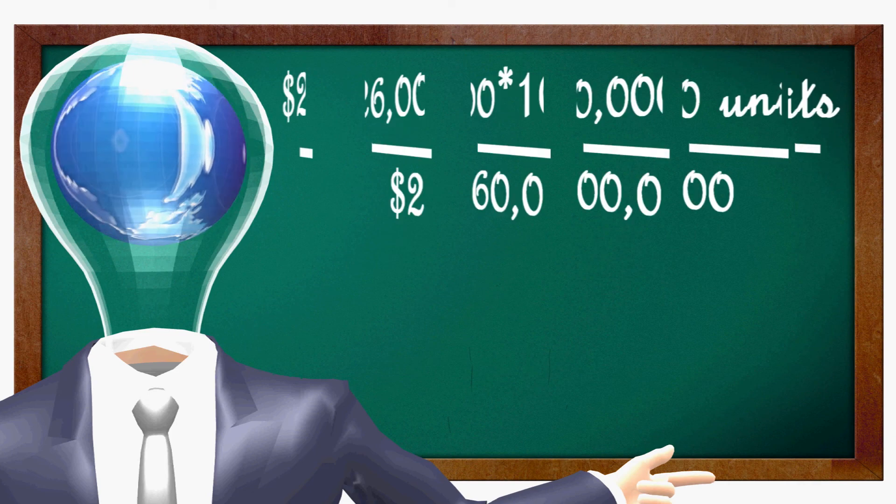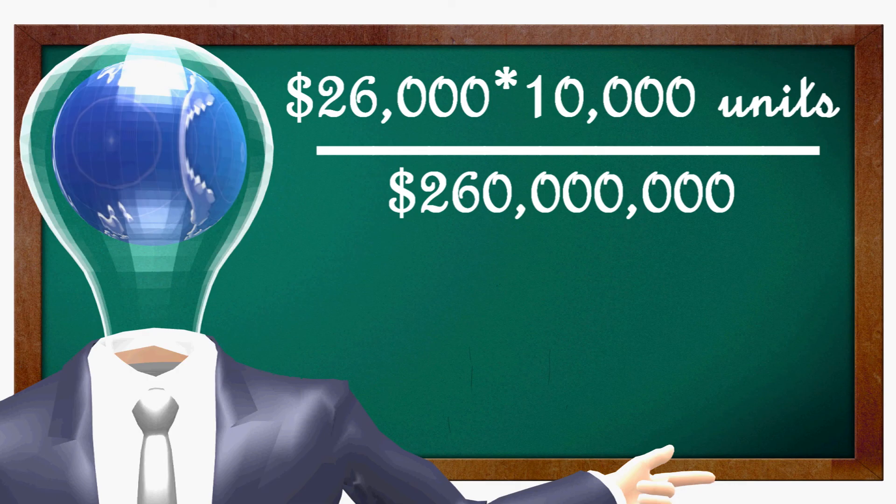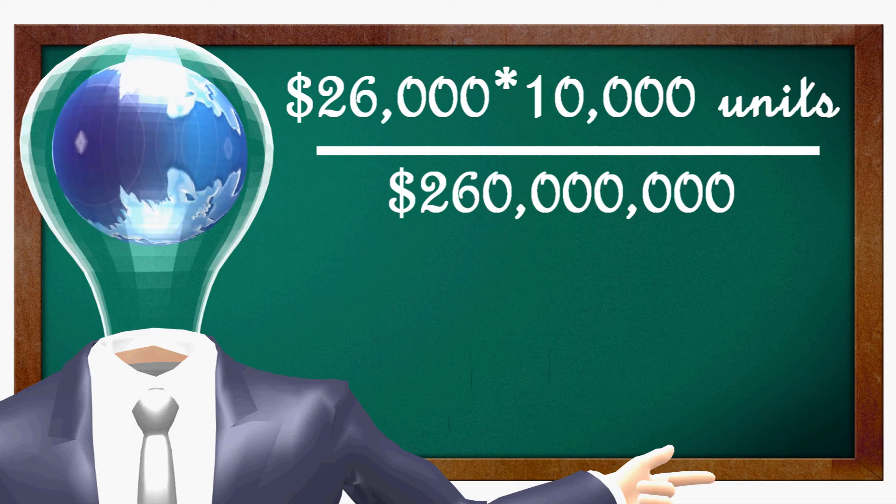The formula for this is 26,000 cost of unit, times 10,000 number of units nationally in operation. This equals $2.6E+08.